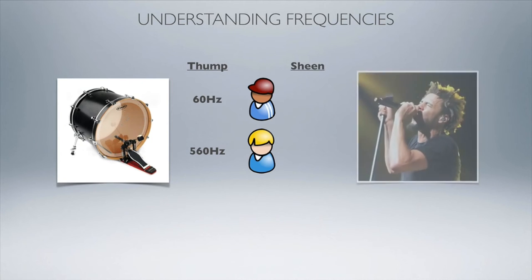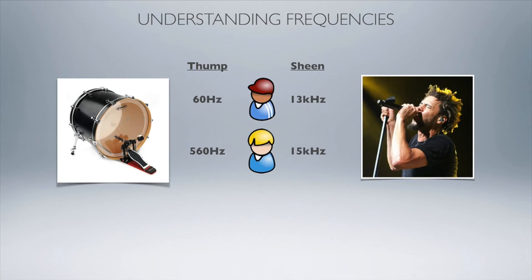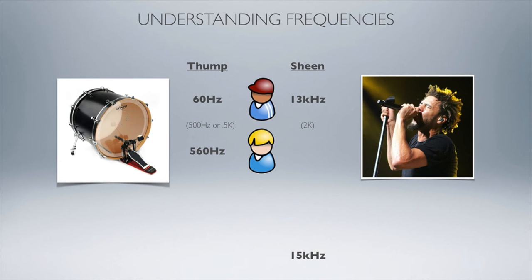What about the sheen of a vocal — the air, the breath of a vocal — where does that live? Engineer A says that's around 13k, 13,000 Hertz. Engineer B says no, he really thinks it's around 15k. So again they're not agreeing. On the kick drum thump they're about 500 Hertz — half a k — apart. But on the sheen side they are actually 2,000 Hertz apart on where that sheen lives.